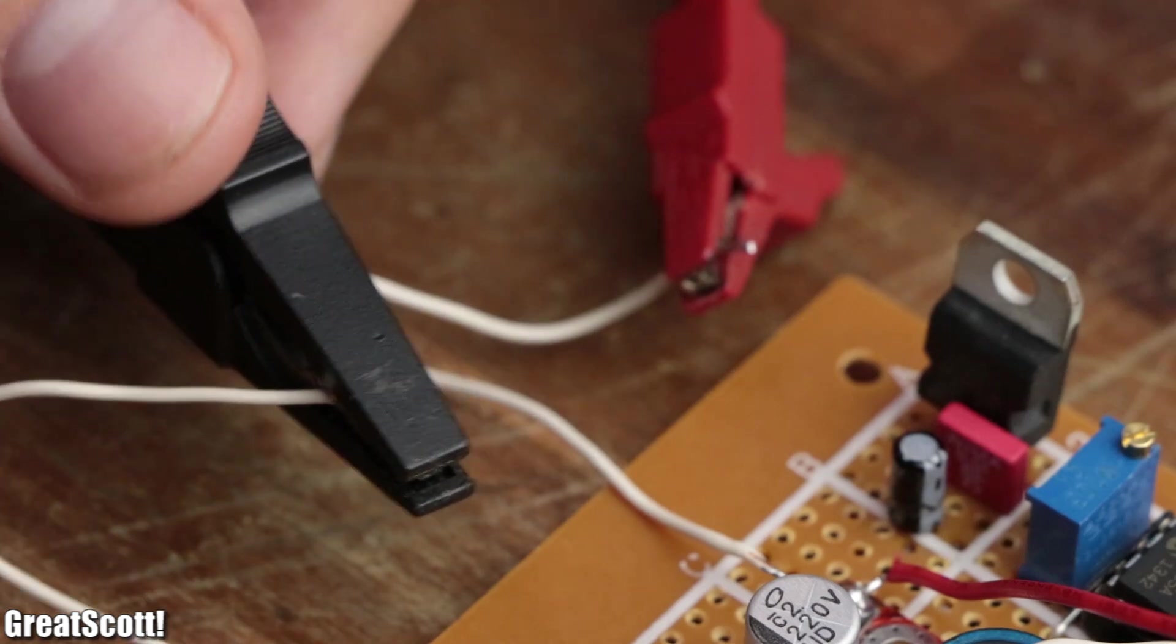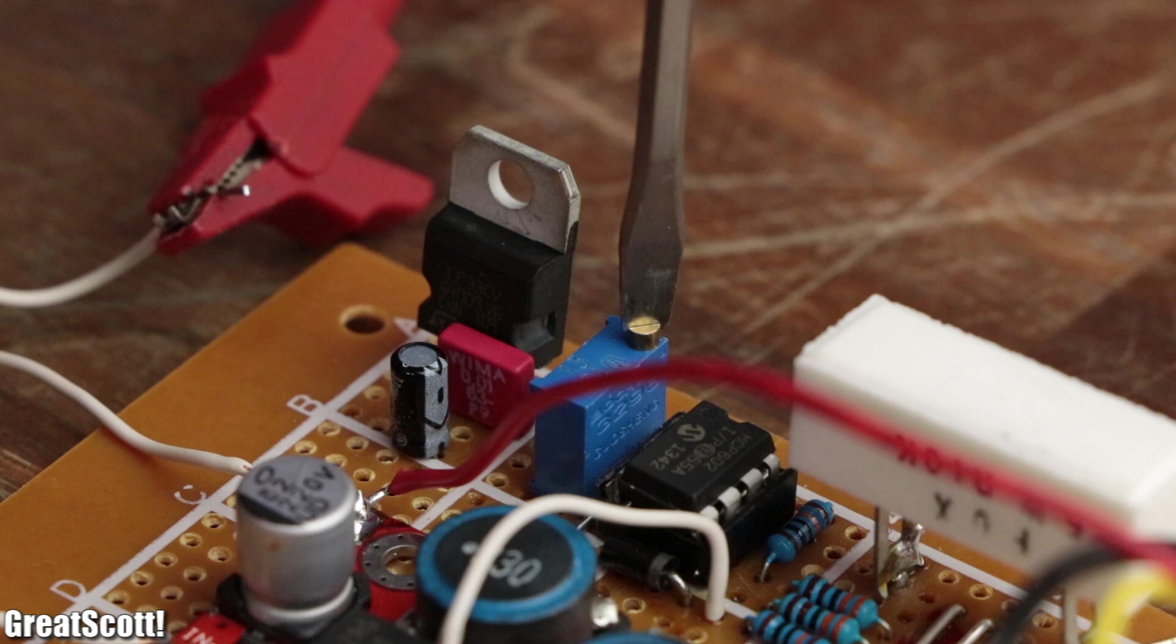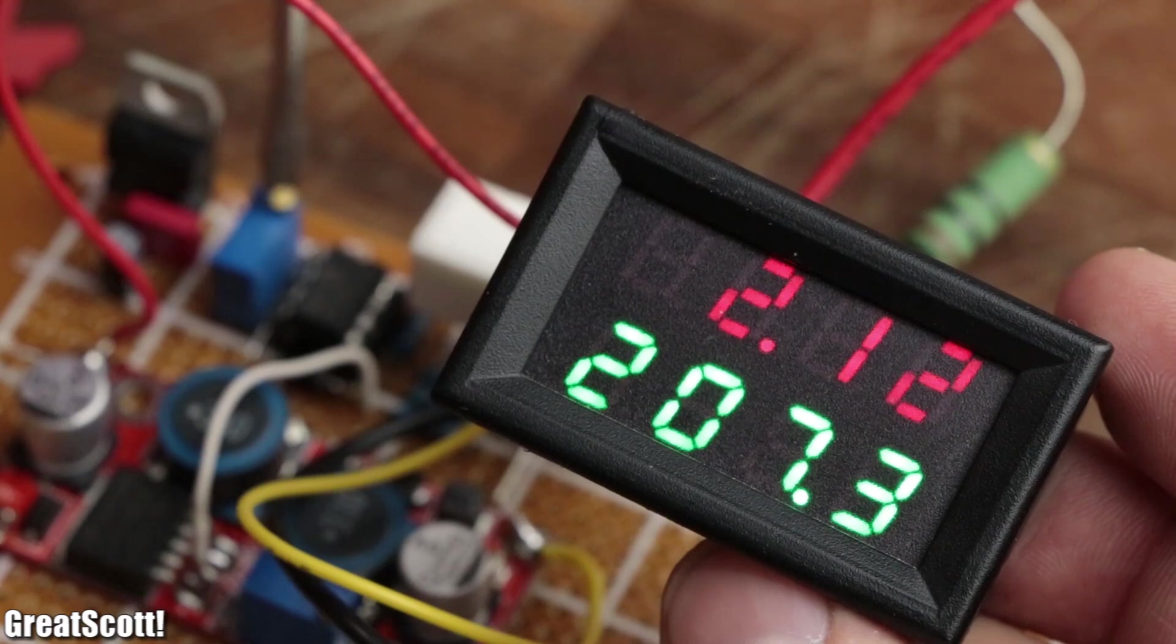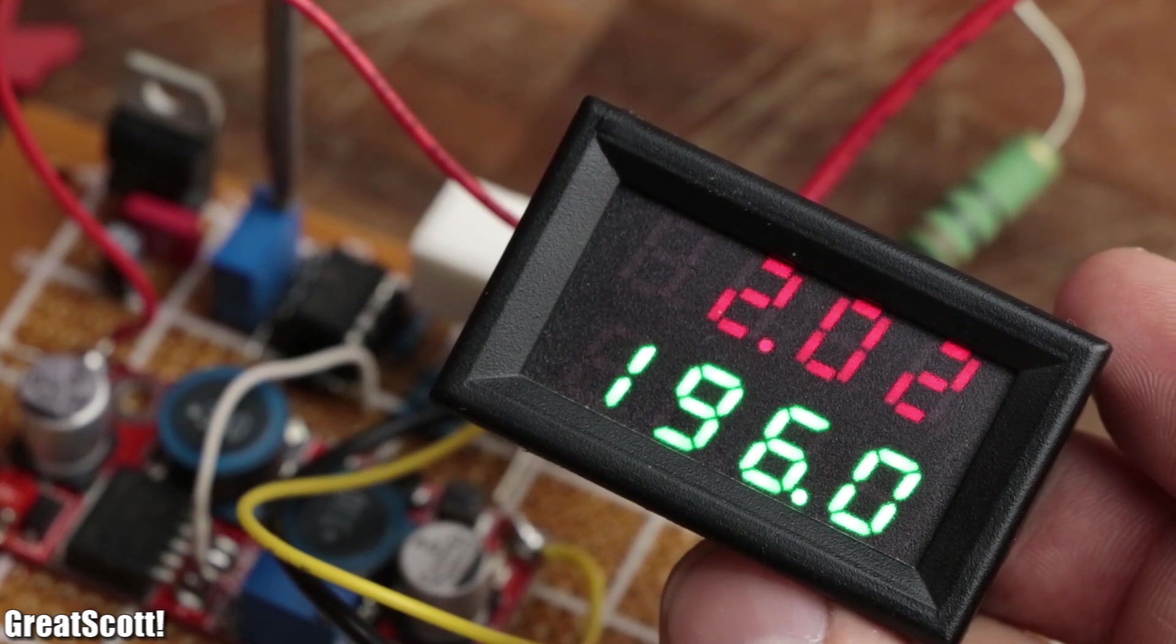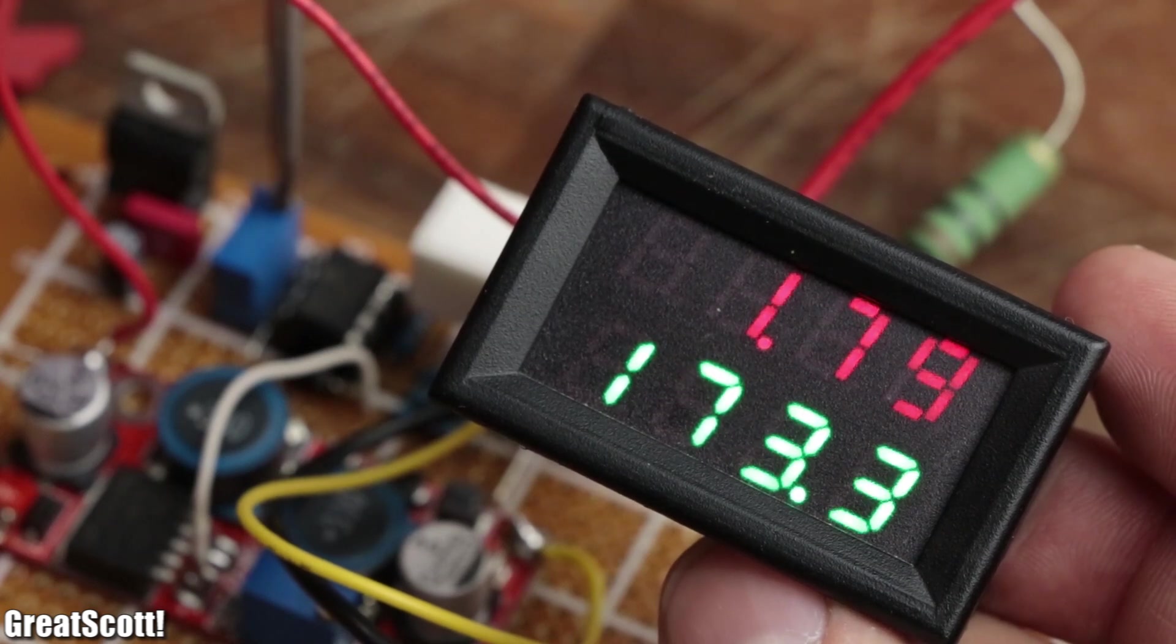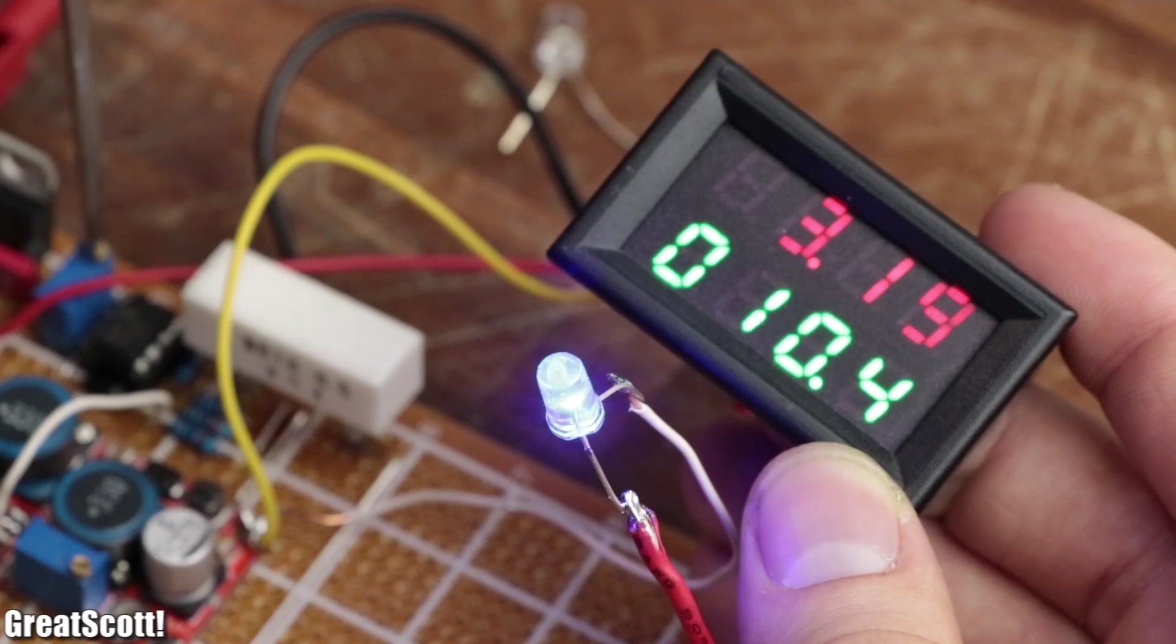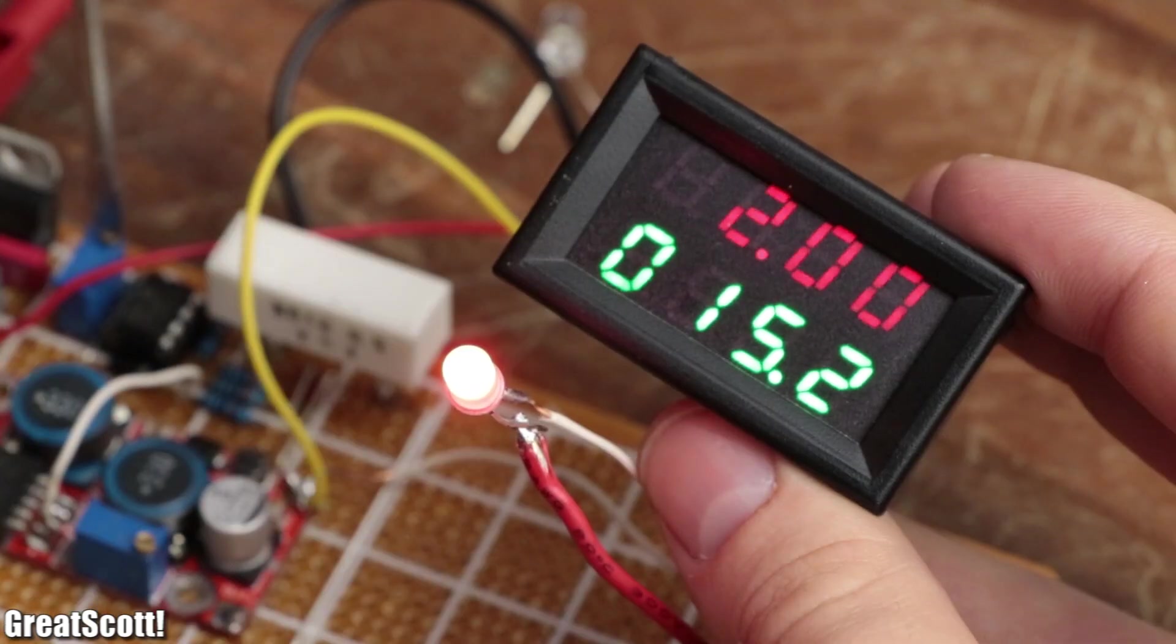After powering the circuits, we can like usual adjust the output voltage fluently. But once we start playing around with the current limit trimmer, we can set the maximum output current to which the output voltage has to adjust according to the attached load. We can even set the current limit so low that we can now use this buck boost converter to test LEDs, which is pretty handy.